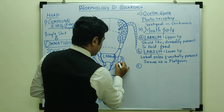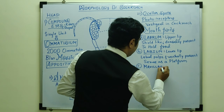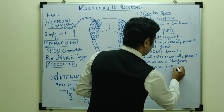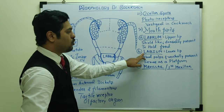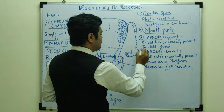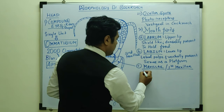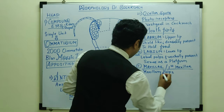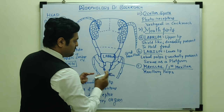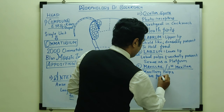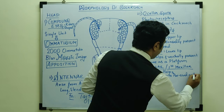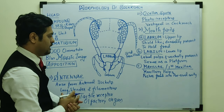The next structure is the maxillae, also called the first maxillae. The labium is considered the second maxillae. From the maxillae arise extensions called maxillary palps. The function of the maxillae is to push food into the pre-oral cavity, helping pass food toward the mouth region.